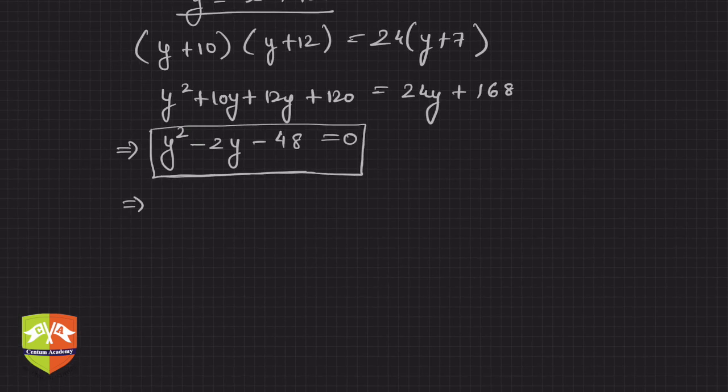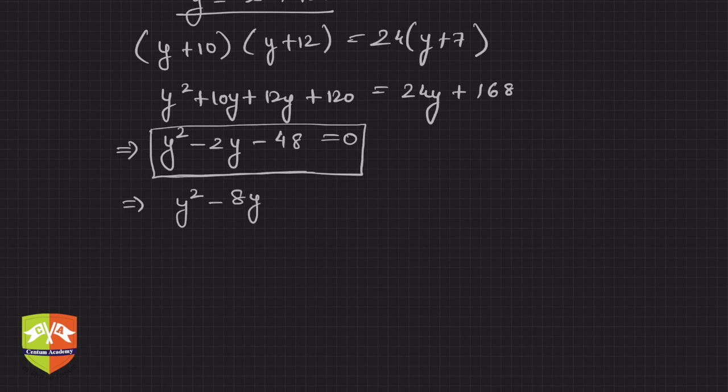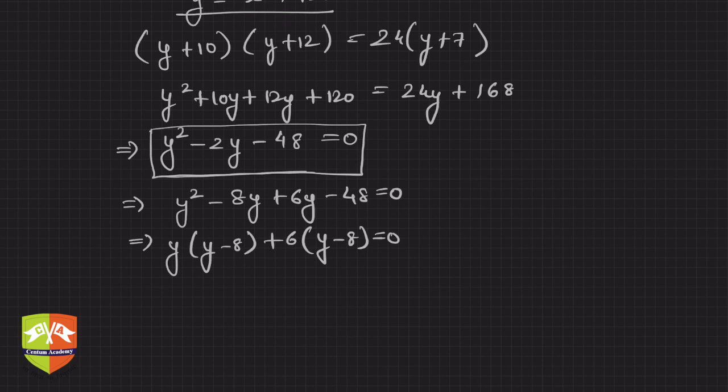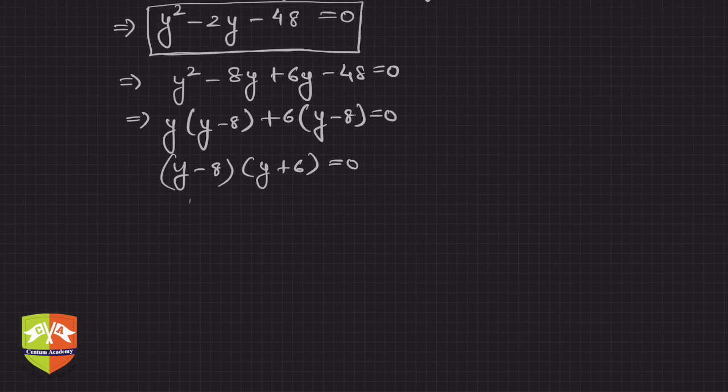Let's solve it. I can again use splitting the middle term. So 48 is 8 times 6, so y²-8y+6y-48 equals 0. This implies y is common, so y-8, and here it is 6 common, so y-8 is equal to 0. That means y-8 and y+6 is 0.